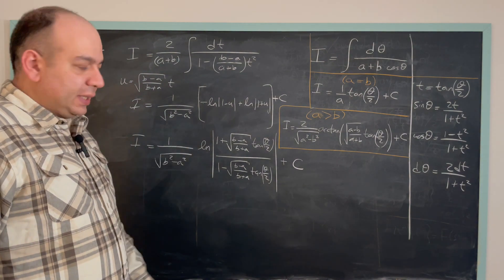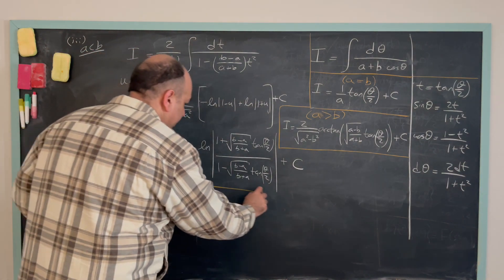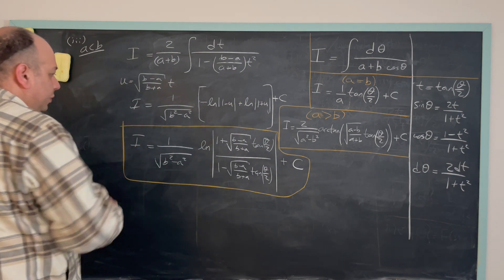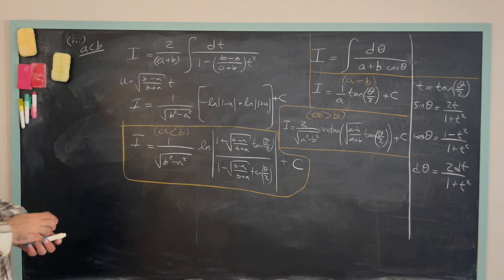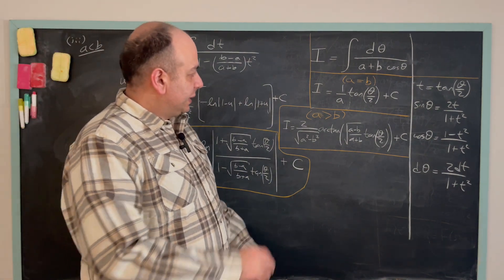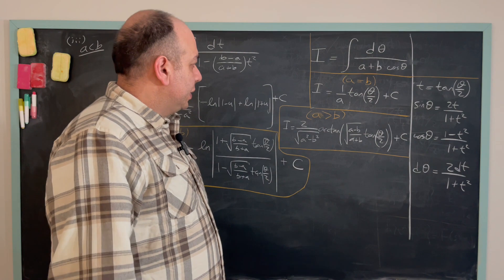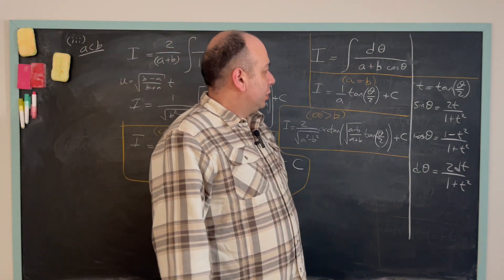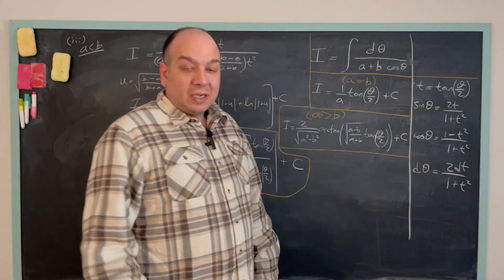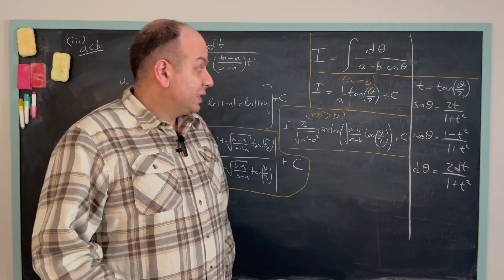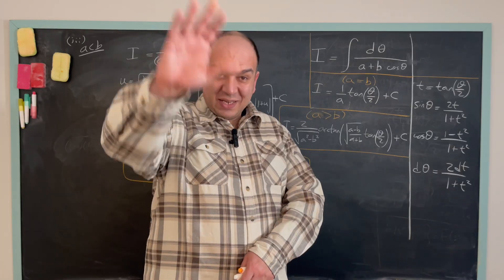This is the final answer for the case when a is less than b. As you see, we have three options depending on the values of a and b: a equals b, a greater than b, and a less than b. We will use this tangent half-angle substitution method in future topics. I hope you enjoyed it. Please go ahead and try to solve different types of integrals in this form — instead of cosine you can have sine, or a combination of sine and cosine. Please write your questions in the comments and try to solve different integrals using this substitution. Have a stemtastic day, see you later, bye.